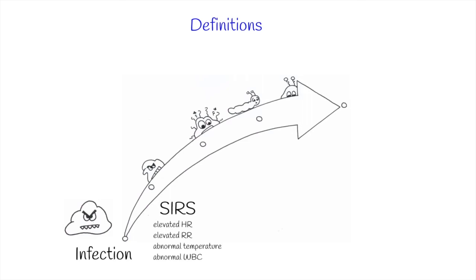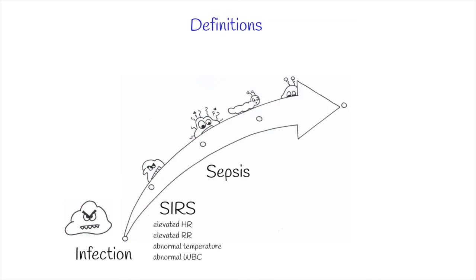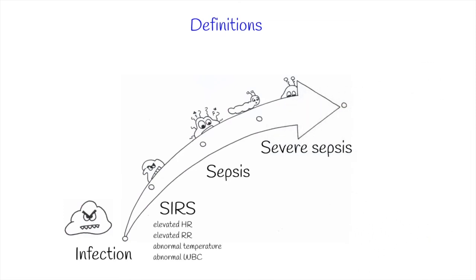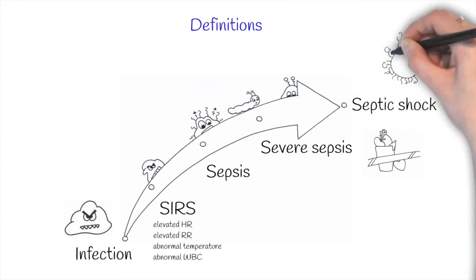This syndrome can be caused by infections but also by other conditions, so when it is associated with infection we speak of sepsis. Severe sepsis is when the sepsis is associated with multi-organ dysfunction syndrome. Finally, we speak of septic shock if the severe sepsis is accompanied by refractory hypotension.